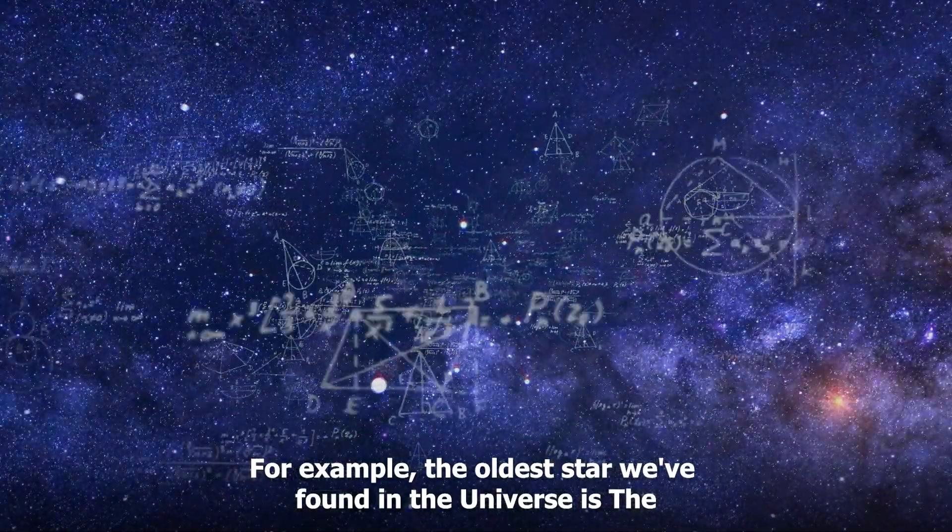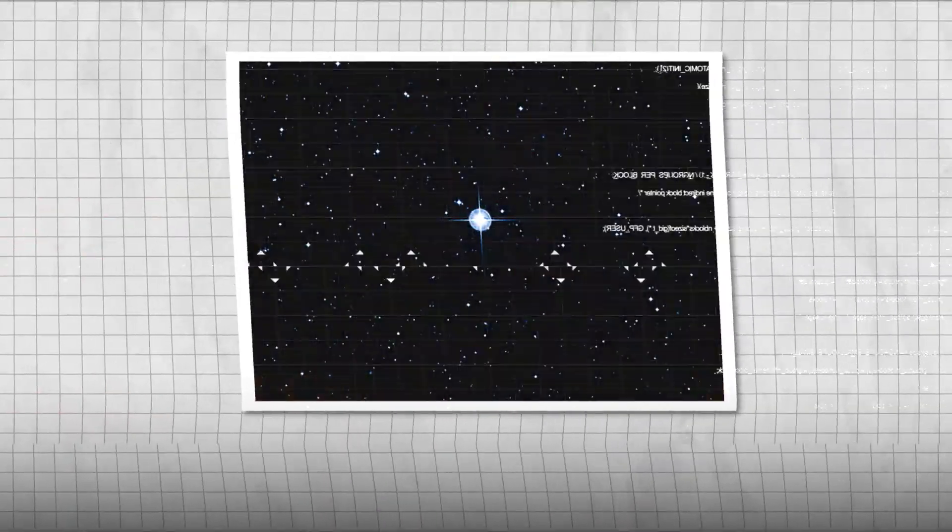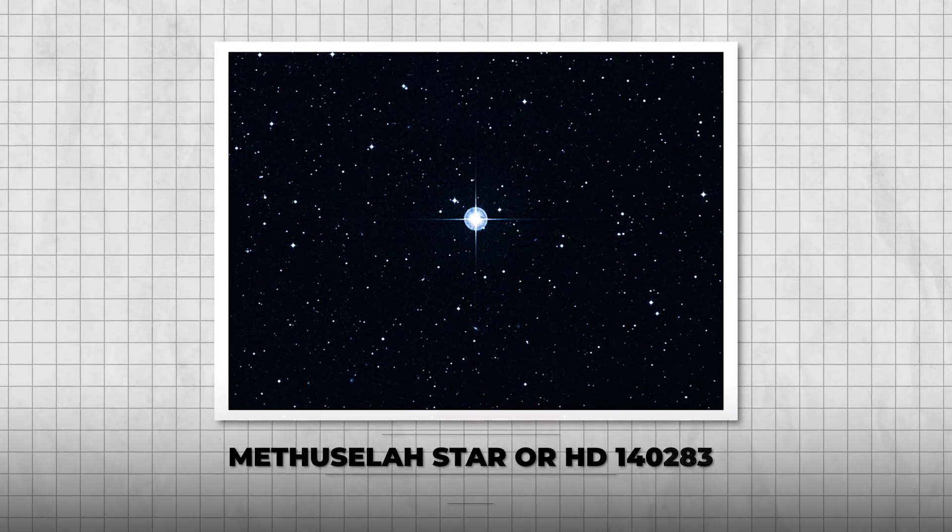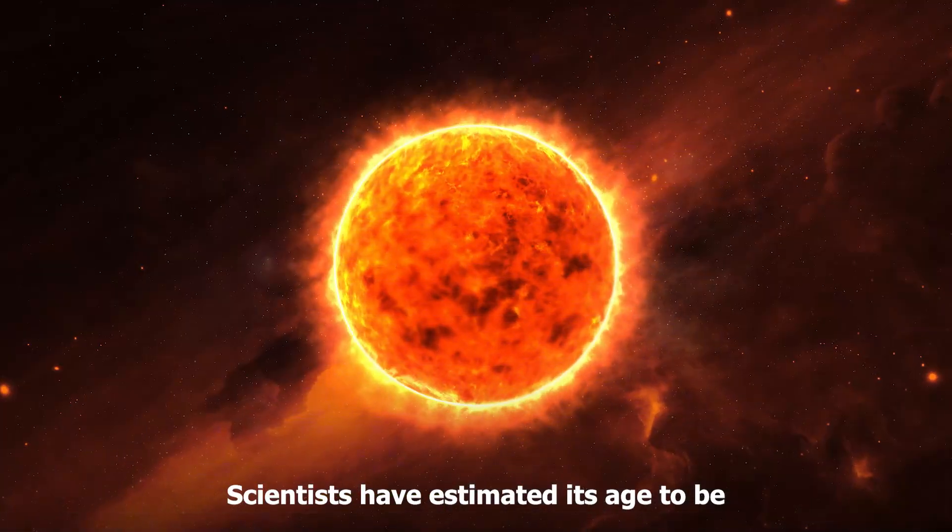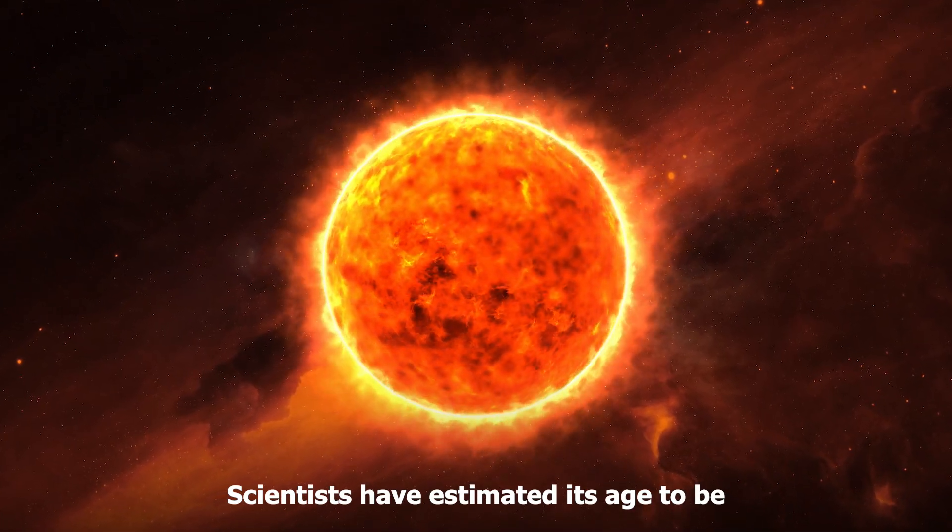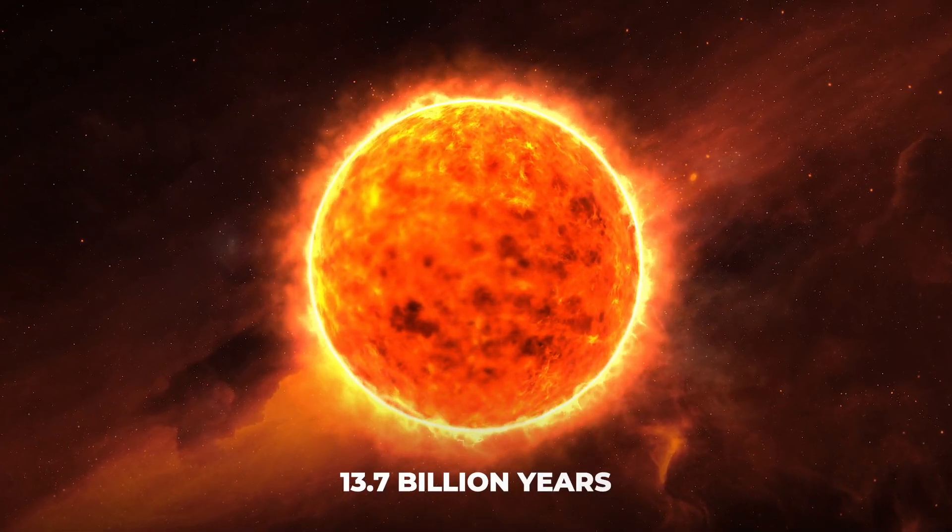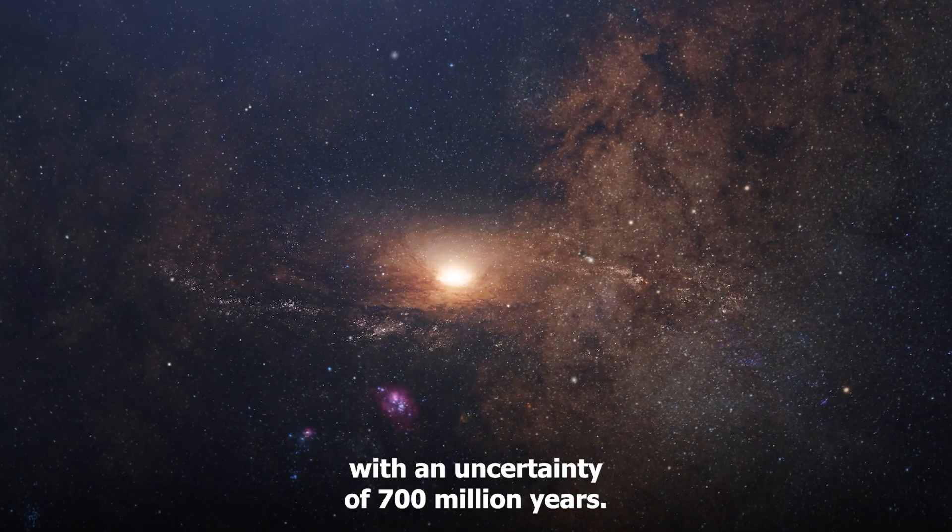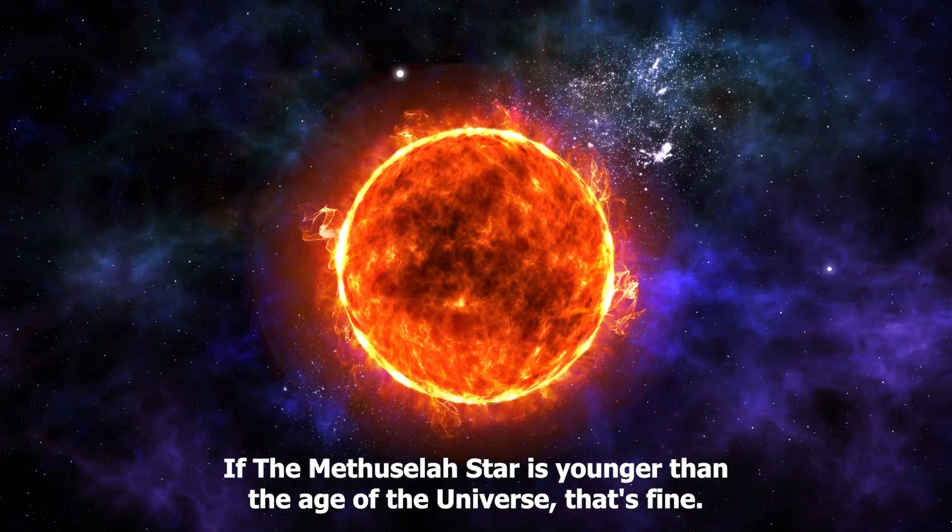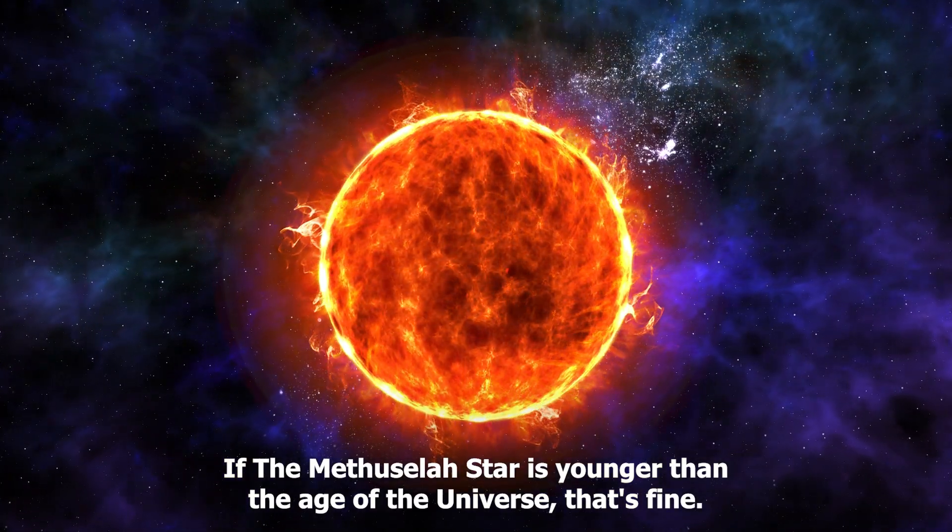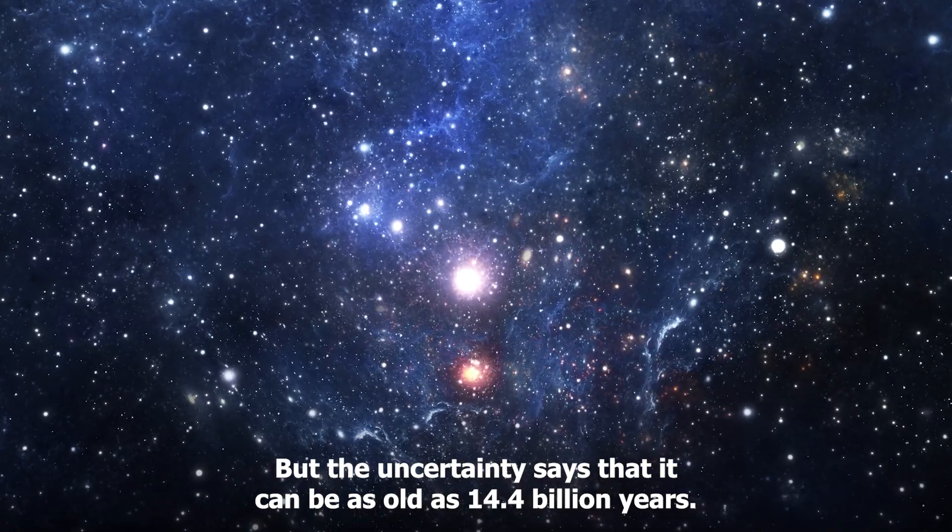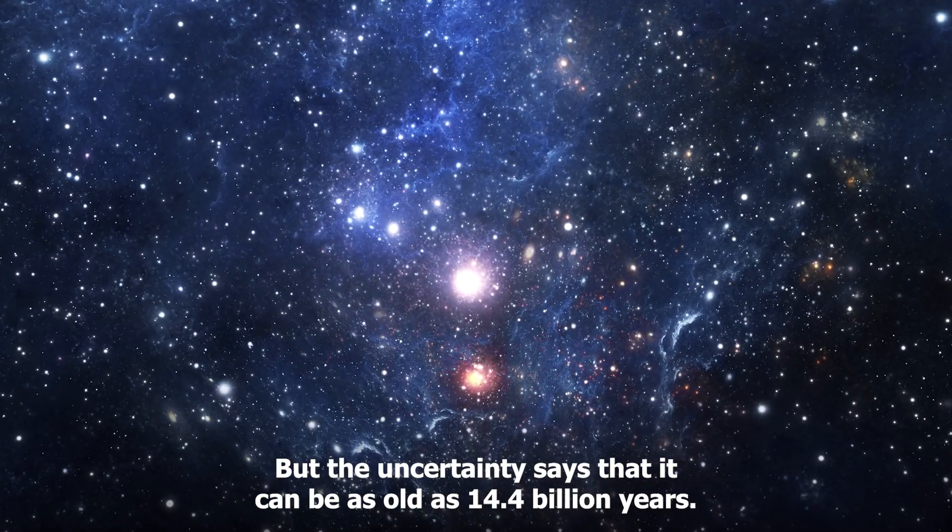For example, the oldest star we've found in the Universe is the Methuselah Star, or HD 140283. Scientists have estimated its age to be 13.7 billion years, with an uncertainty of 700 million years. If the Methuselah Star is younger than the age of the Universe, that's fine. But the uncertainty says that it can be as old as 14.4 billion years.